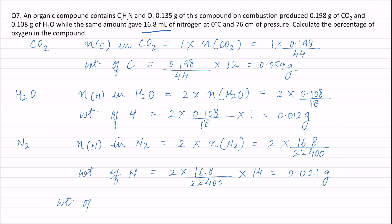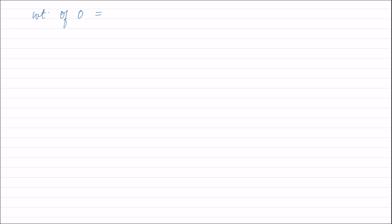The sum of the weights of carbon, hydrogen, and nitrogen = 0.054 + 0.012 + 0.021 = 0.087 gram. The total weight of the organic compound is 0.135 gram. Therefore, weight of oxygen = 0.135 − 0.087 = 0.048 gram.